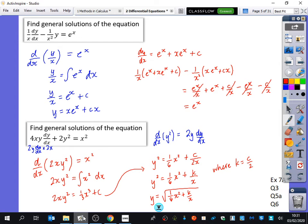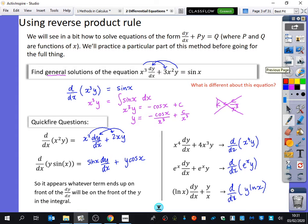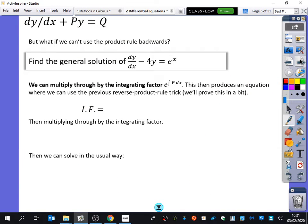Okay, so what if our equations were not reverse product rule? What if our equations looked like this instead? This is not the reverse product rule because here you have a y, but you don't have anything that goes in front of the dy/dx, right? So this doesn't look like the product rule backwards here.